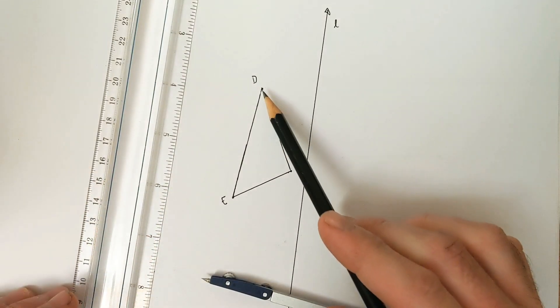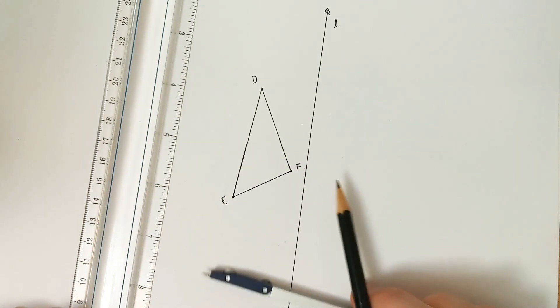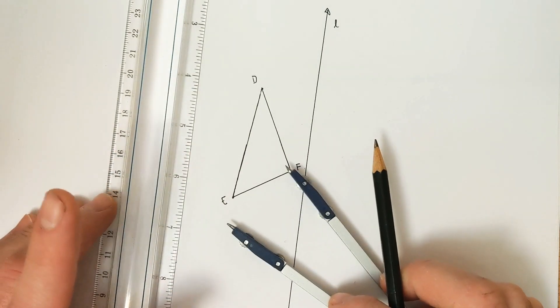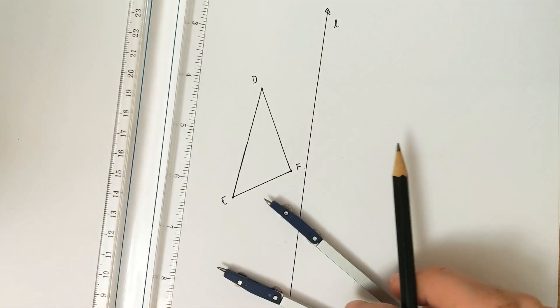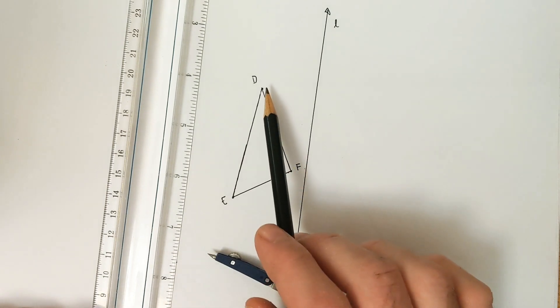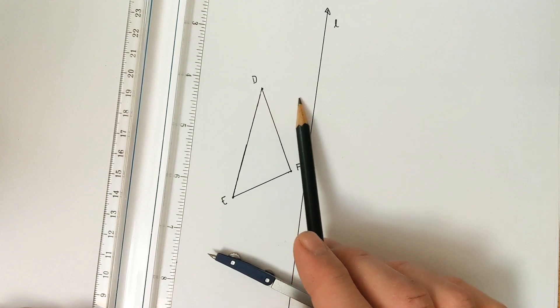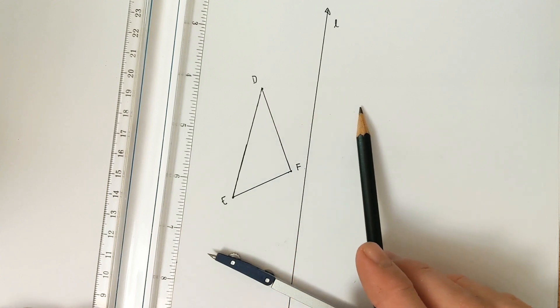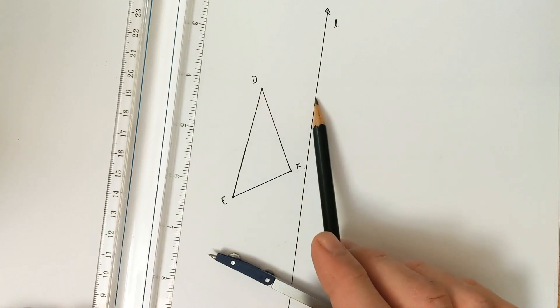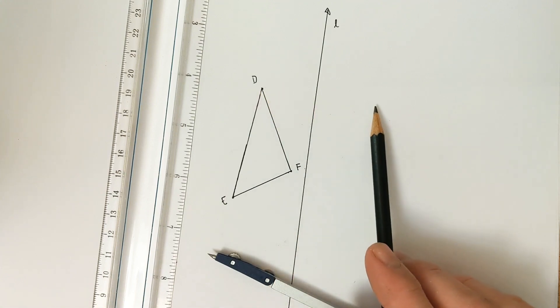We're going to reflect this triangle across this line here using just our compass and a straight edge. So the big concept behind a reflection is that for every point in our pre-image here, they're all going to travel in a line that's perpendicular to the line of reflection.